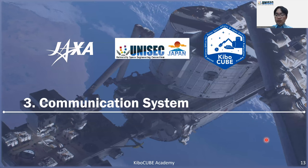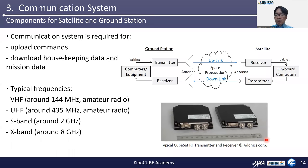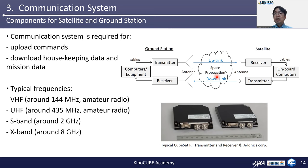Next is Section 3: communication system. I'll show the introduction to the communication system. Communication system is required for uploading commands from a ground station to a satellite, and for downloading housekeeping data and mission data such as Earth images taken by satellite cameras. These days there is optical communications, but traditionally we use radio signal communications.